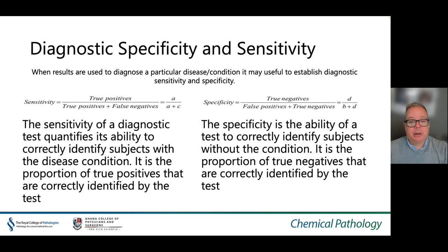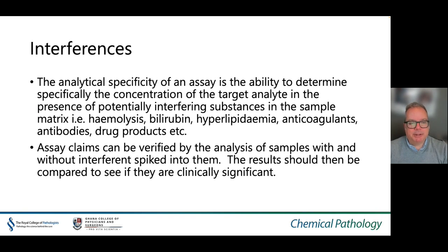When results are used to diagnose a particular disease or condition, it may be useful to establish diagnostic sensitivity and specificity. The sensitivity of a diagnostic test quantifies its ability to correctly identify subjects with the disease — it is the proportion of true positives correctly identified. The specificity of a test is its ability to correctly identify subjects without the condition — the proportion of true negatives correctly identified. The analytical specificity of an assay is the ability to determine specifically the concentration of the target analyte in the presence of potentially interfering substances such as haemolysis, bilirubin, hyperlipidaemia, or anticoagulants. Assay claims can be verified by analysing samples with and without interference spiked in, and the results compared to assess clinical significance.